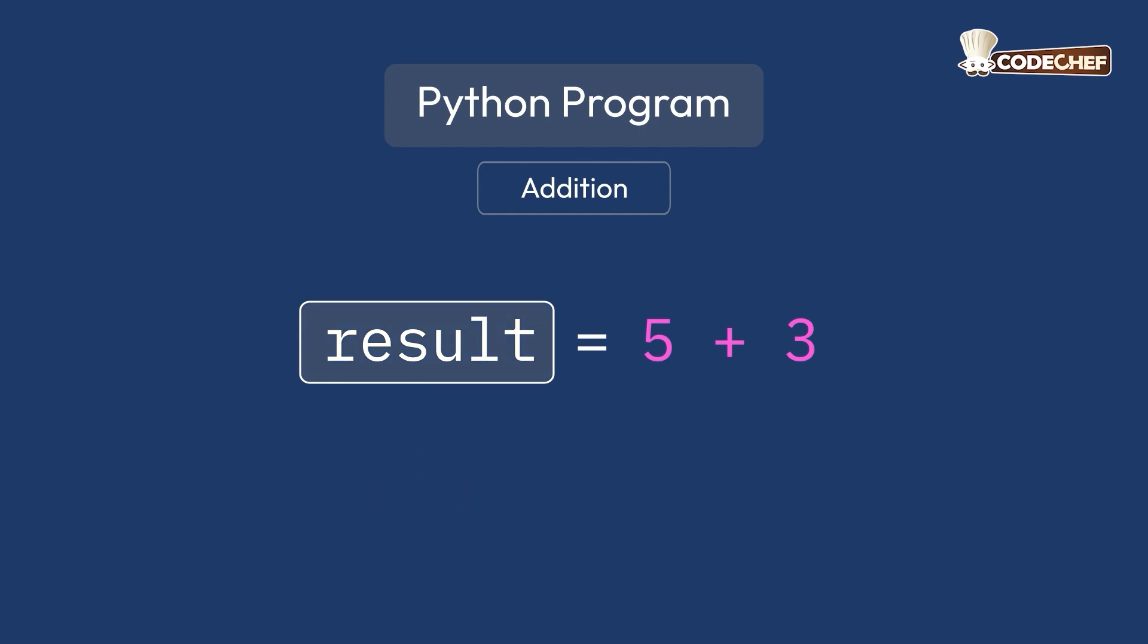In code, you can write it like this. Perfect. This line of code calculates the value of 5 plus 3 and stores it in a variable called result.